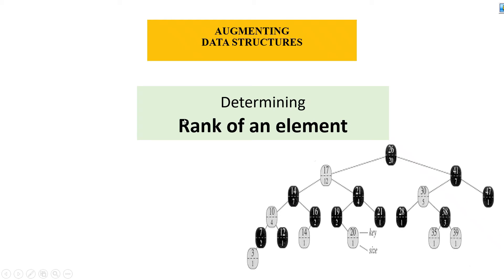Hello everyone. In this video we are going to learn how to determine the rank of an element. This is part of a series on augmenting data structures. We have already discussed how to augment data structures, what an order statistics tree is, and how to find the element of a given rank. Now here we will do the reverse: finding the rank of a given element in our augmented RB tree, which we call an order statistics tree.